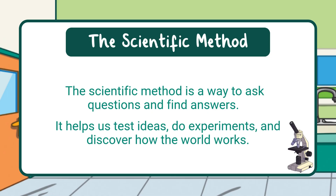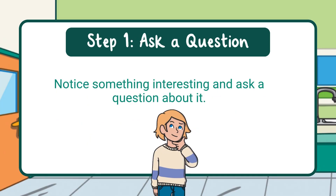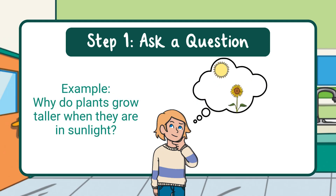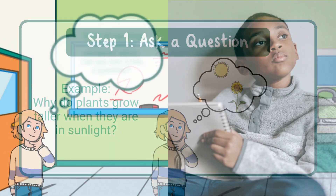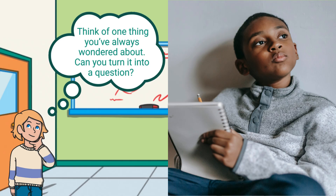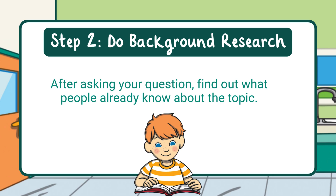Step one: ask a question. The first step is to notice something interesting and ask a question about it. Your question should be something you're curious about. For example, why do plants grow taller when they are in sunlight? Asking a good question gives your experiment a purpose. Think of one thing you've always wondered about — can you turn it into a question?